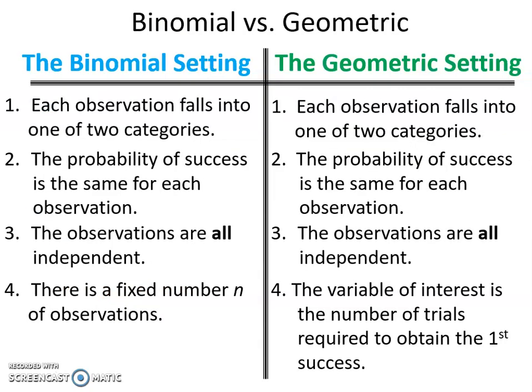Now that we've done binomial and geometric, let's compare them. For both: each observation falls into one of two categories, the probability of success is the same for each observation, and observations are all independent. Here's the difference: for binomial, there's a fixed number of observations — that's our N. For geometric, the variable of interest is the number of trials required to obtain the first success.